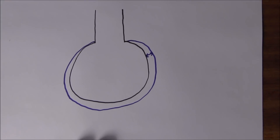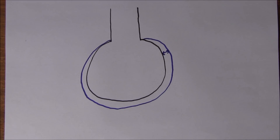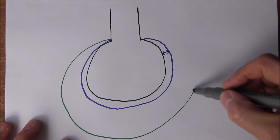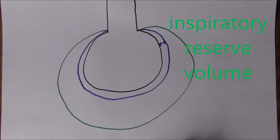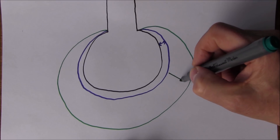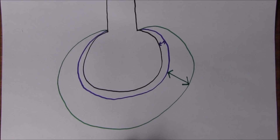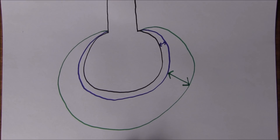Then we decide we'd like to breathe in as much as we possibly can — a really big breath in — taking us up to the inspiratory reserve volume. We breathe in until we can't get any more in, which increases the volume as shown by the green line. The inspiratory reserve volume goes from where we normally stop breathing in with tidal ventilation to the absolute maximum we can possibly breathe in. In men that's about 3,100 mils of air, and in women it's about 1,900 mils of air.